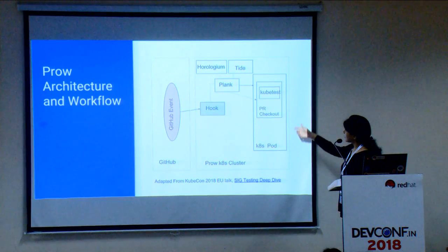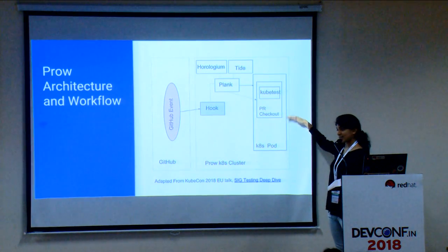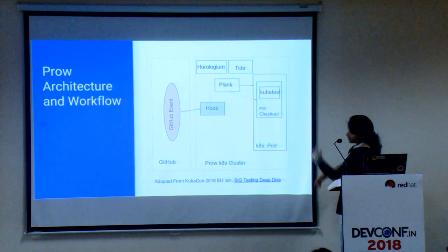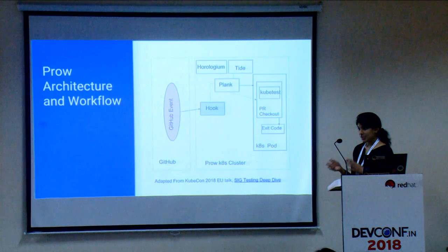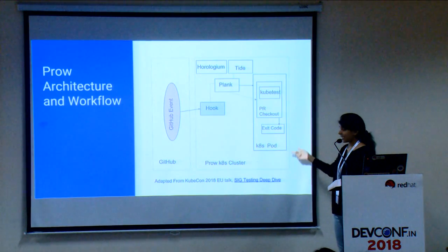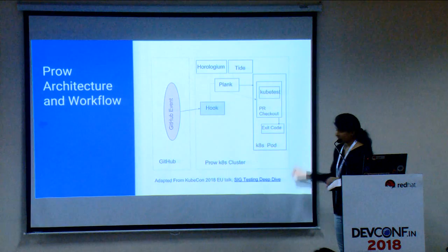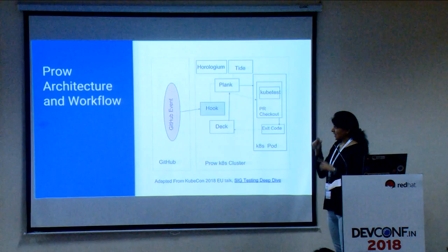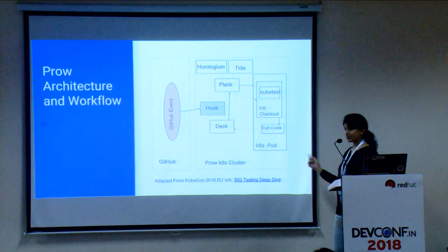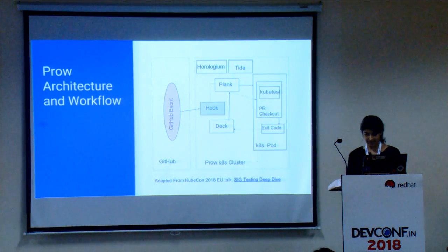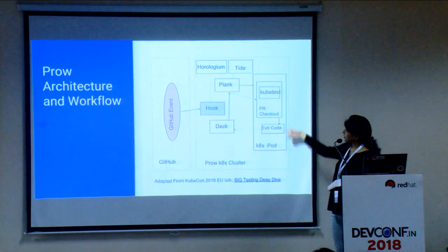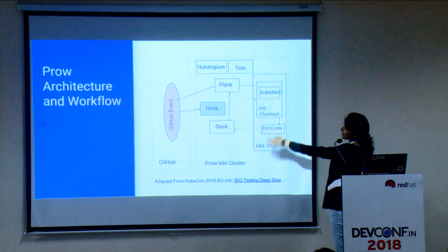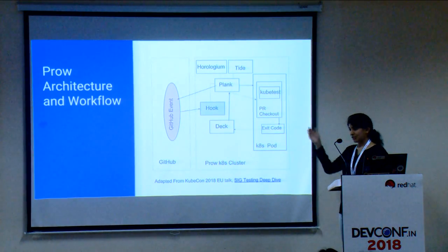Plank will schedule a Kubernetes pod for your Prow job if it is not already scheduled. It checks out your PR, and everything runs as a Kubernetes pod, executing all the tests. Once the tests are executed and the Prow job finishes, it captures the exit code indicating whether the job was successful or not. The success code is then sent to Deck, which is the dashboard UI, so you can see what happened. The status is also returned to Plank, which sends the result back to the GitHub event and updates your PR.